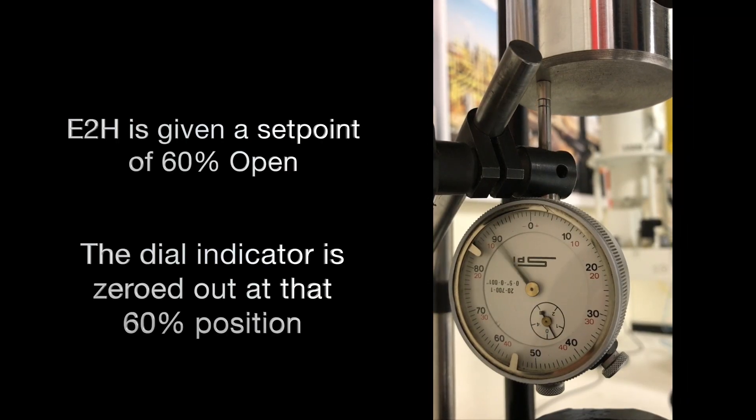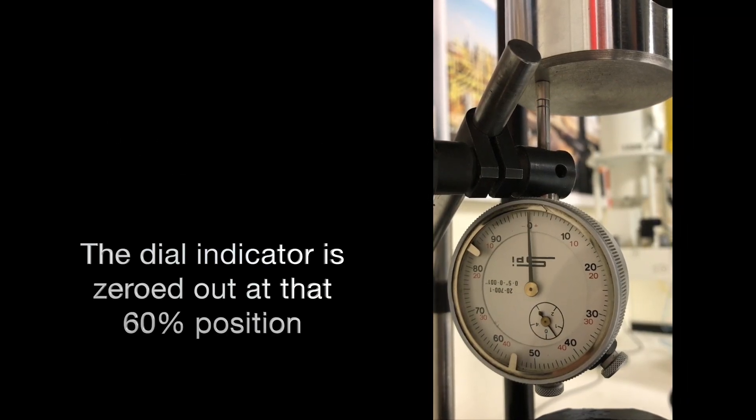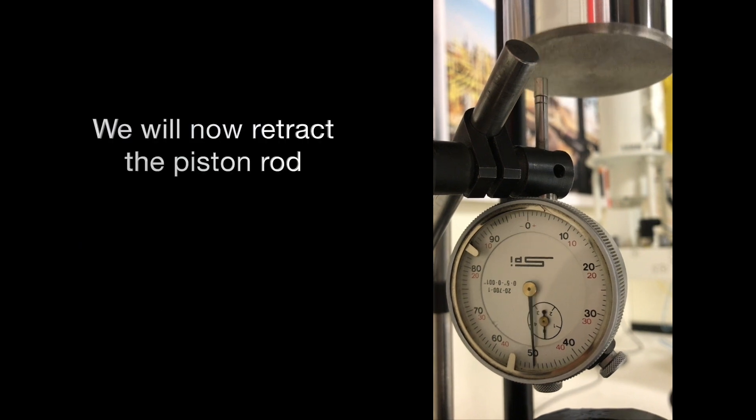The E2H is given a set point of 60% open. The dial indicator is then zeroed out at that 60% position.